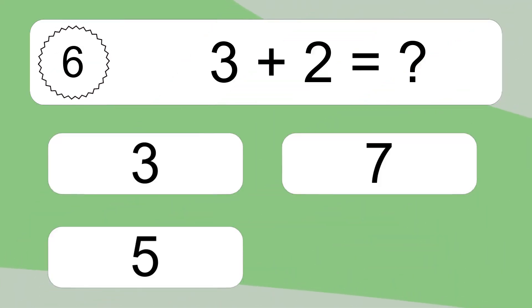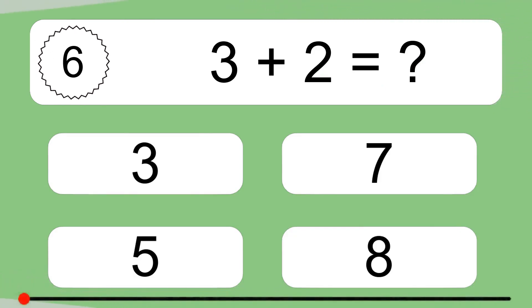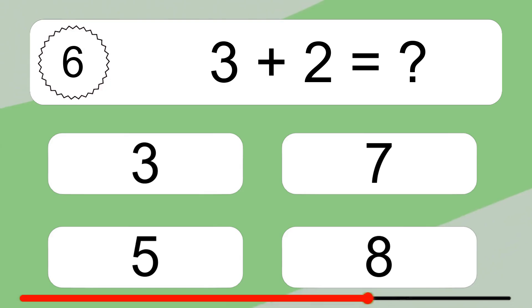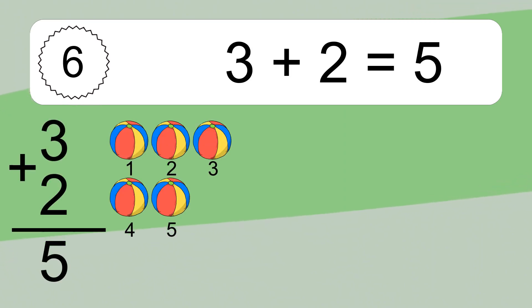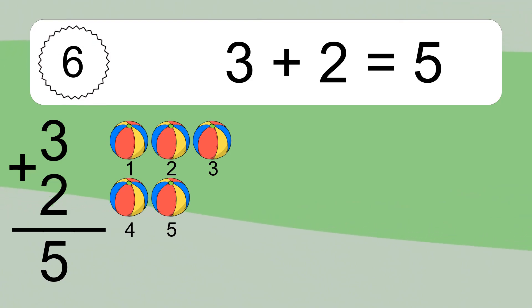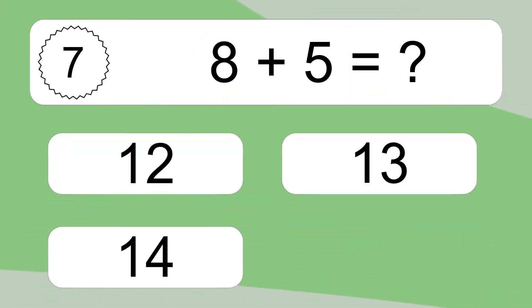1 plus 7 equals 8. Let's count it: 1, 2, 3, 4, 5.